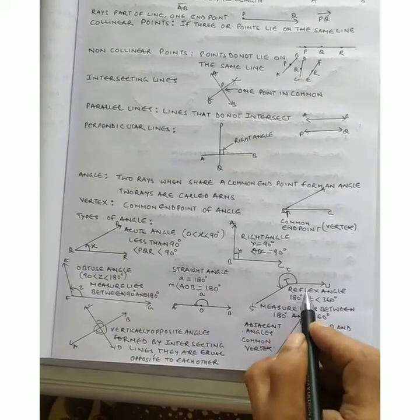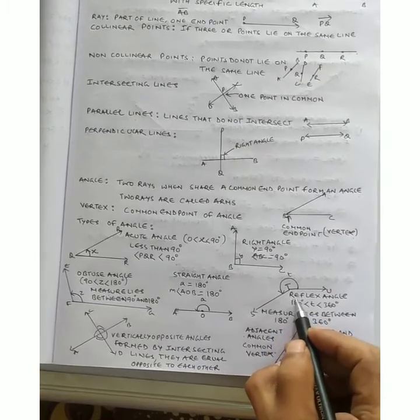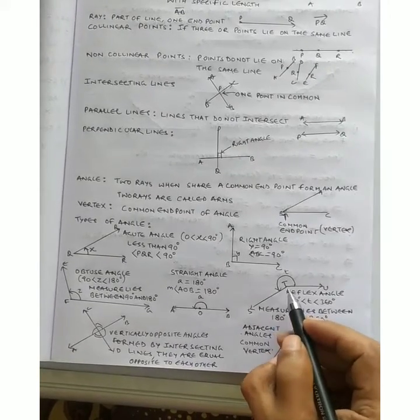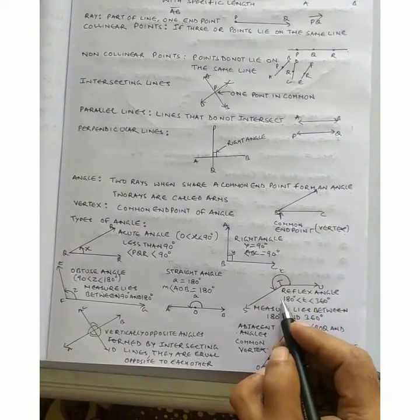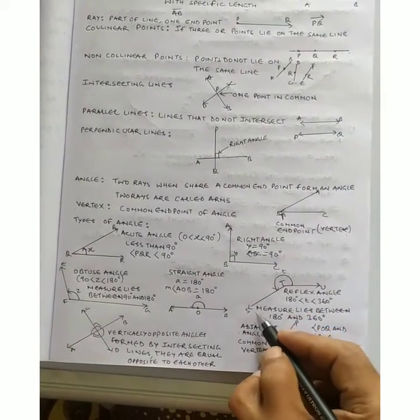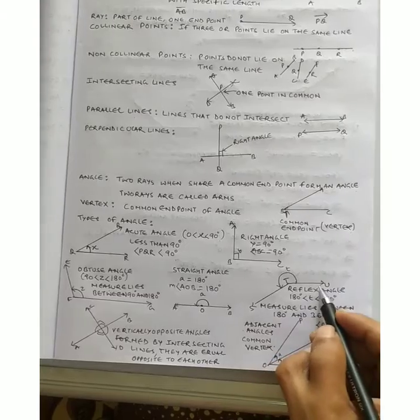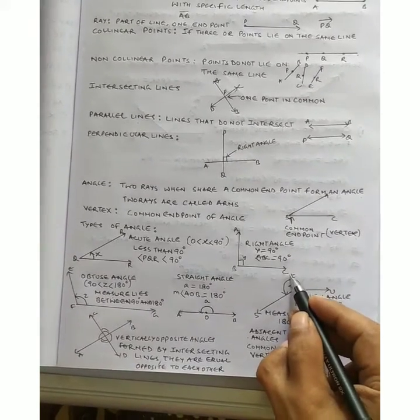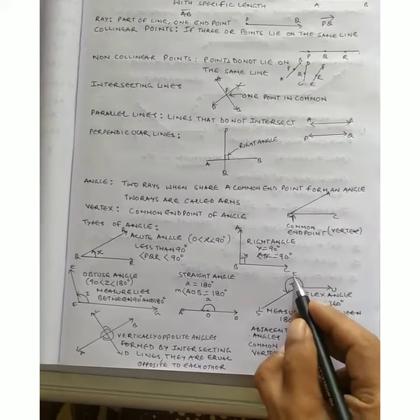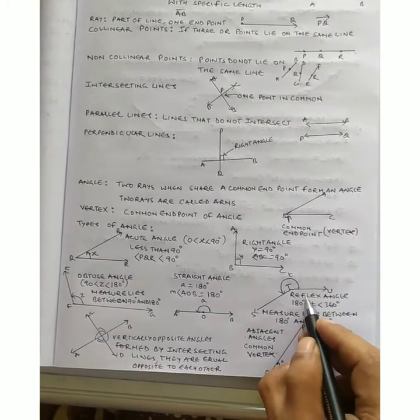Reflex angle. Reflex angle jaanne se pehle, angle at a point, kisi bhi point ka angle 360 degrees hota hai. The reflex angle, just see yahan STU. Ab hume iska reflex angle nikalna hai. It is marked as t. Ab humne t se mark kiya wa hai.